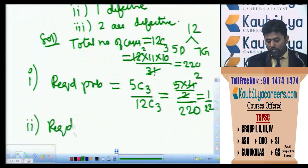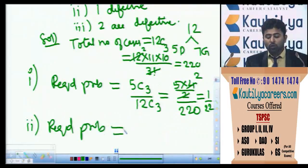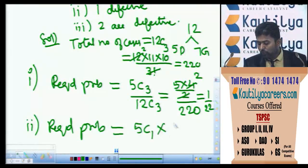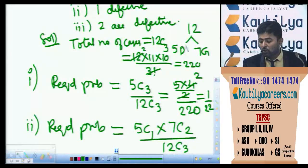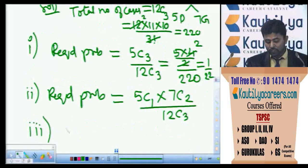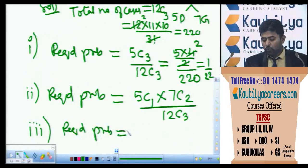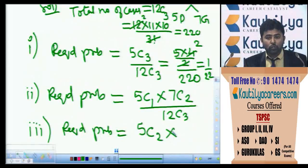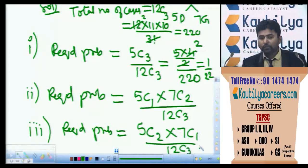For the second part, exactly 1 defective: required probability equals 5C1 into 7C2 by 12C3 — taking 1 from 5 defectives and 2 from 7 good items. For the third part, exactly 2 defective: required probability equals 5C2 into 7C1 by 12C3 — selecting 2 from 5 defectives and 1 from 7 good items.